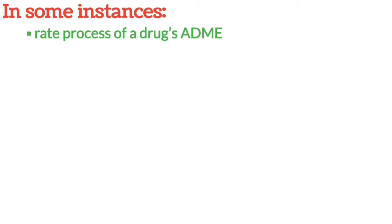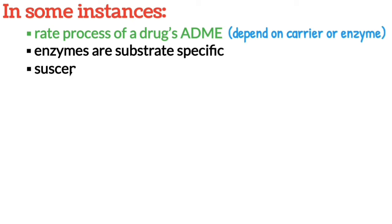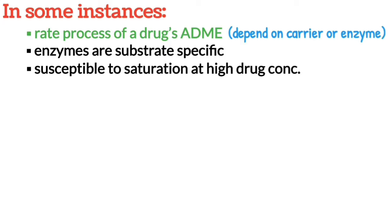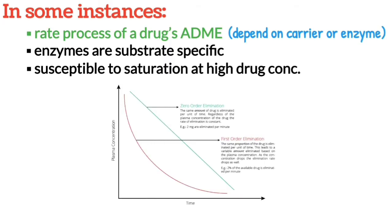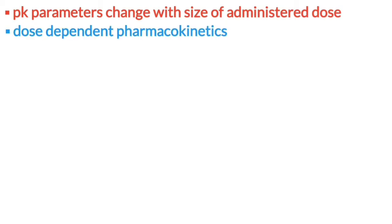But in some instances, the rate process of a drug's absorption, distribution, metabolism and elimination are dependent upon carriers or enzymes. These enzymes are substrate-specific, have definite capacities and are susceptible to saturation at high drug concentrations. In such cases, an essentially first-order kinetics transforms into a mixture of first-order and zero-order rate processes, and the pharmacokinetic parameters change with the size of the administered dose. The pharmacokinetics of such drugs are said to be dose-dependent.